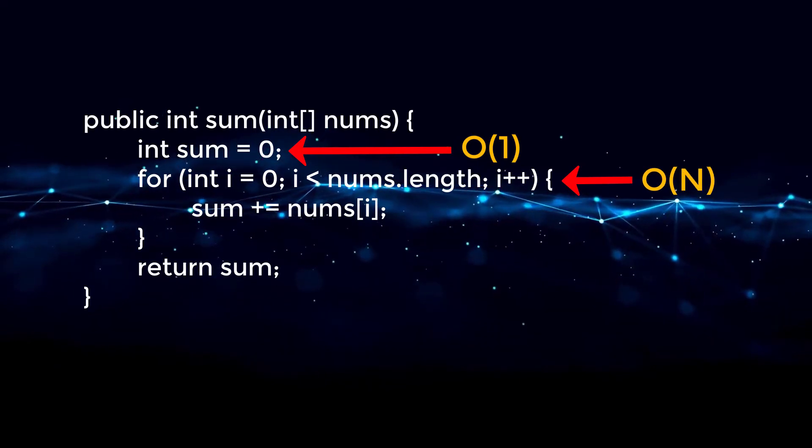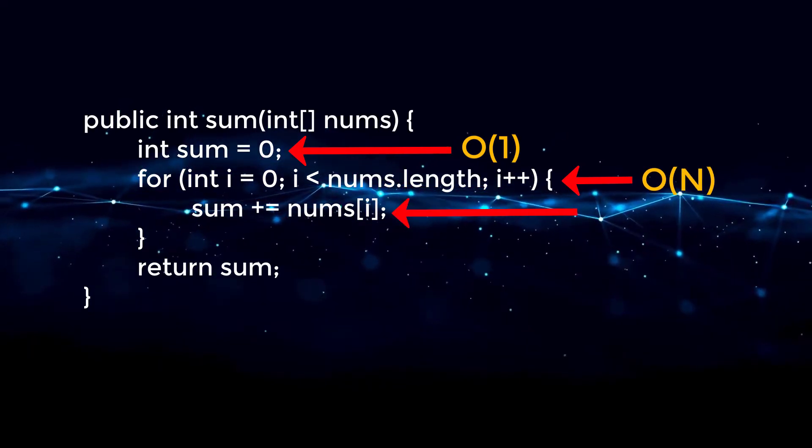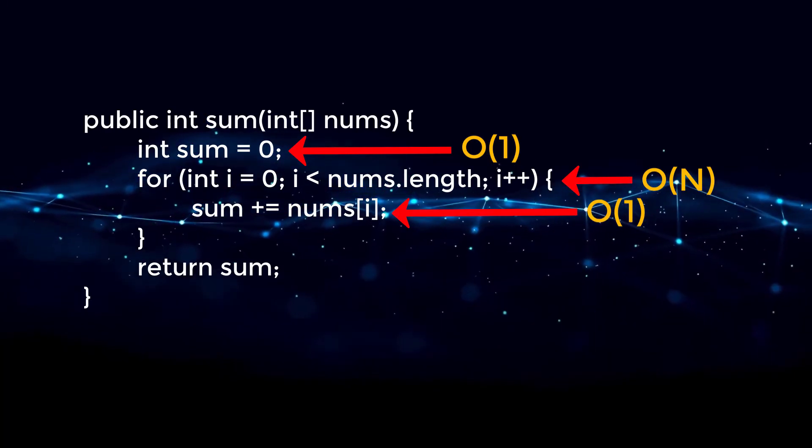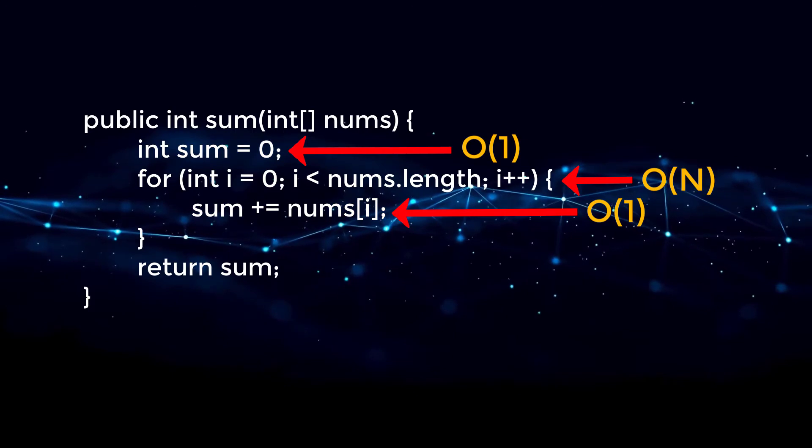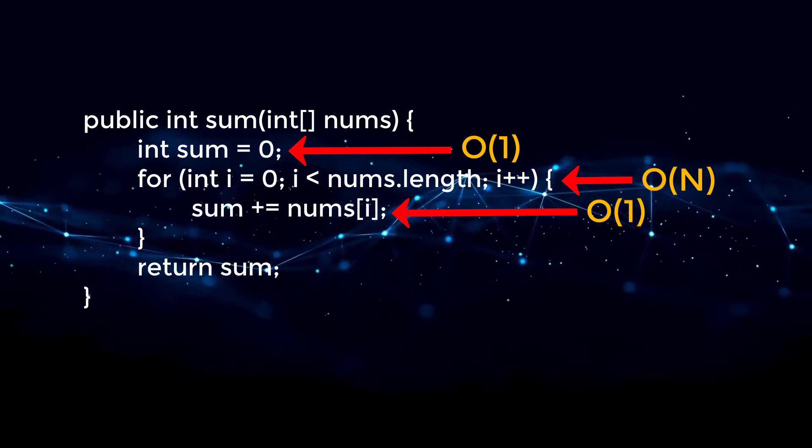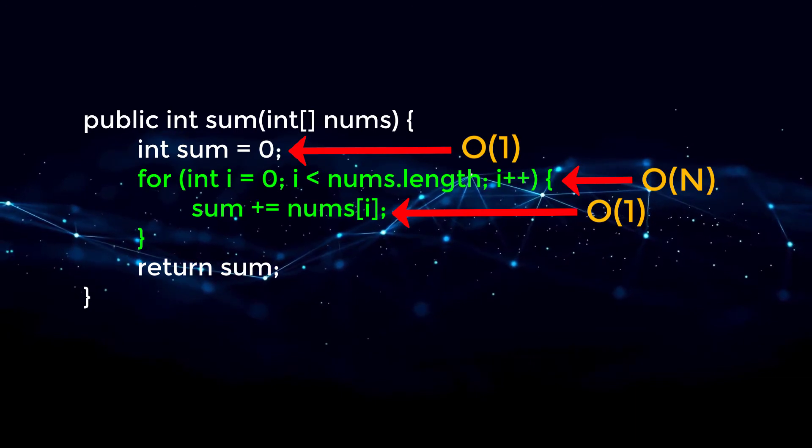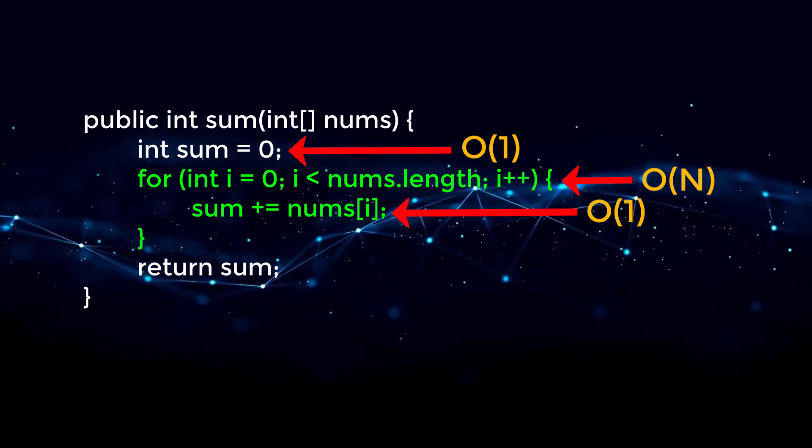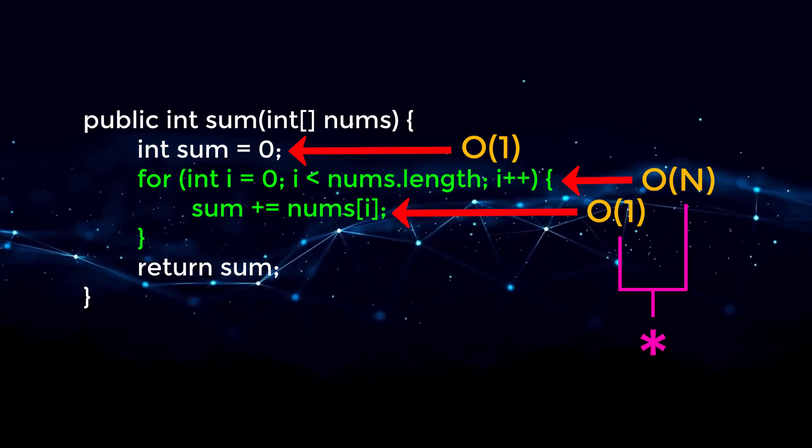Next, if we move to our third line, that is also running in constant time, because all we're doing is summing up the numbers to that sum variable. So this leads to another important step in Big O notation. Whenever we have nested code, so for example, code inside of a for loop or while loop, then we are going to multiply those terms together instead of adding them.